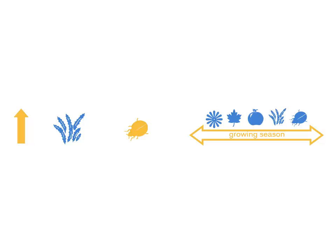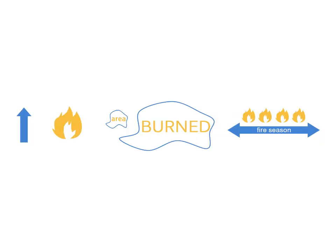The growing season is increasing across the country, which may actually benefit forest and grassland ecosystems and croplands. But longer growing seasons are beneficial for invasives and pests too. Wildfire activity is also changing.